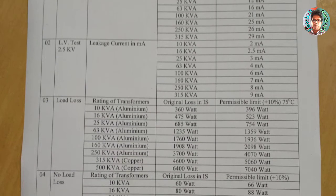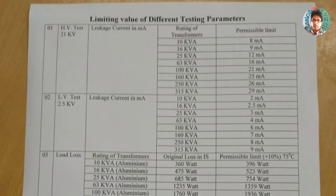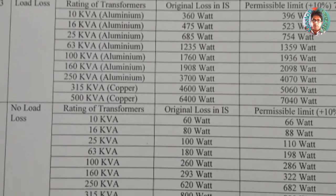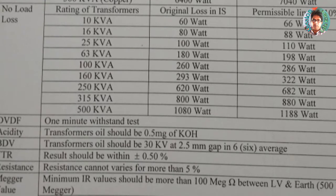Open circuit deterioration — the KVA rate is 10 kVA, the original no-load loss is 60 watts, and the 10% permissible rate is 66 watts. The rated values are: 88 watts, 25 watts, 110 watts, 63 watts, 198 watts, 100 watts, 286 watts, and 170 watts.